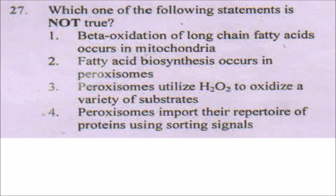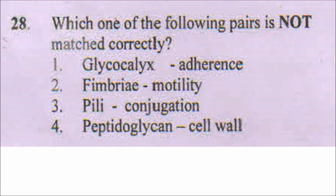The next question asks which statement is not true. The statement 'beta oxidation of long-chain fatty acids occurs in mitochondria' is not true because beta oxidation occurs in mitochondria, but it does not oxidize long-chain fatty acids — rather, short-chain fatty acids are oxidized in mitochondria. Fatty acid biosynthesis occurs in the cytoplasm, while long-chain fatty acids are oxidized in peroxisomes. So the statement that is not true is the one about beta oxidation of long-chain fatty acids.